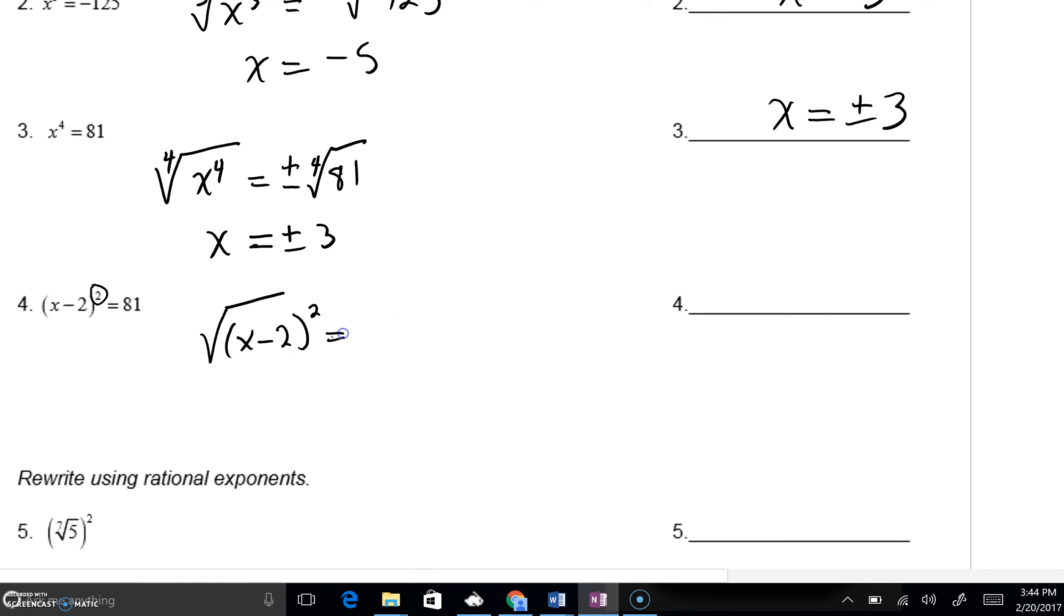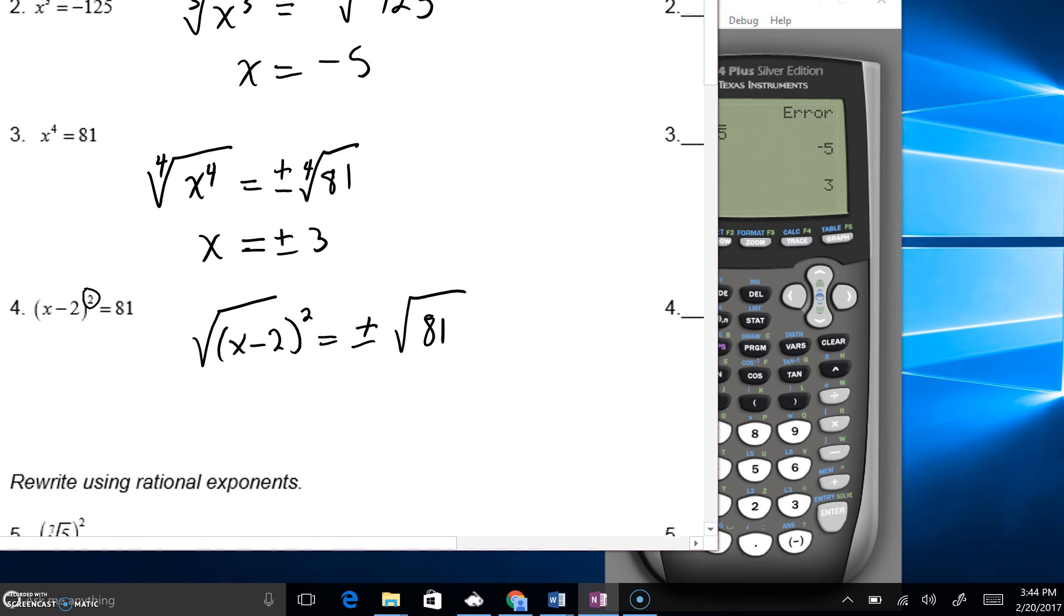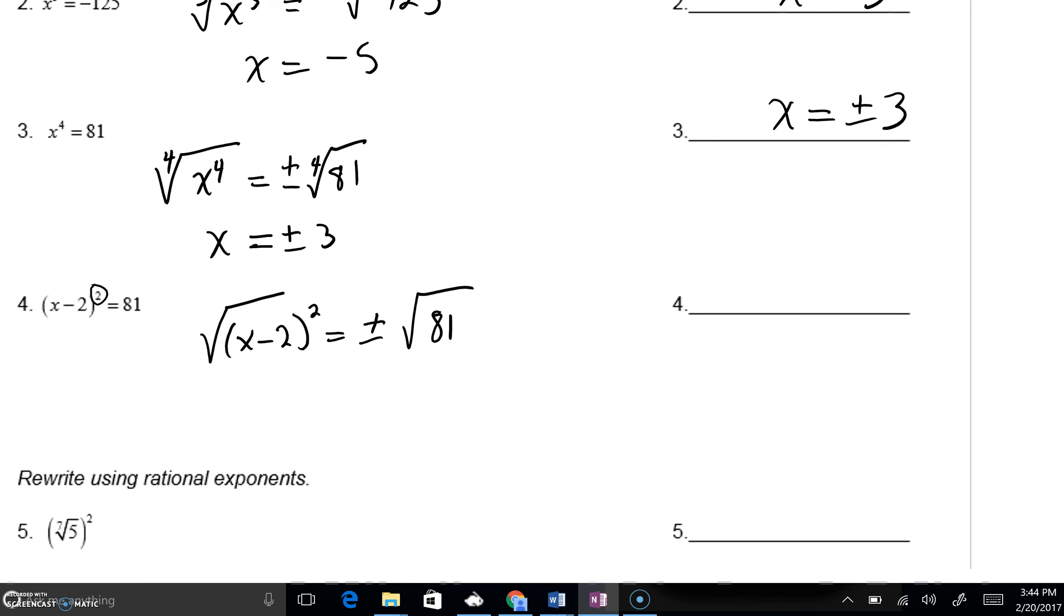I do want to point out that you will still have a plus minus. Notice that I didn't even write the 2 into that little index. Certainly, we could. I will right now write that in, just to show you. It's always understood to be there. You don't have to do that.